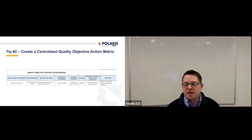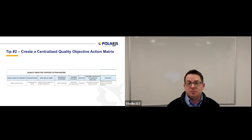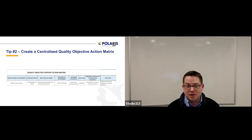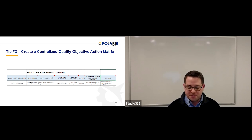Here's a bonus tip. As you complete action items on this list, move them to a separate sheet called 'completed.' These then become objective evidence of continual improvement projects, and that will help you to satisfy clause 10.3, continual improvement.